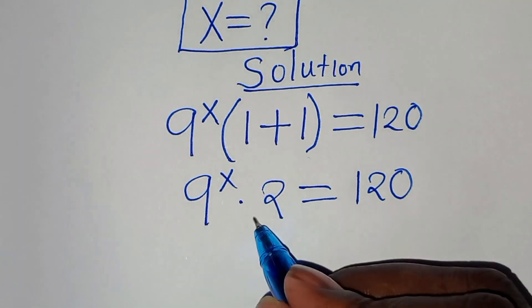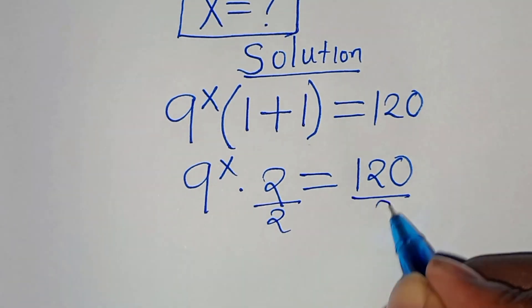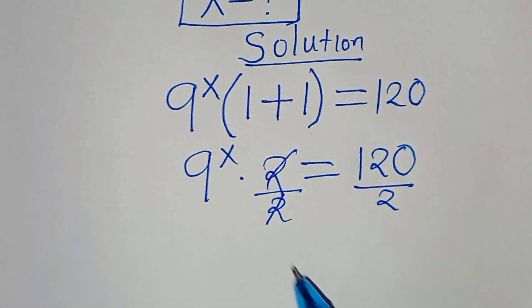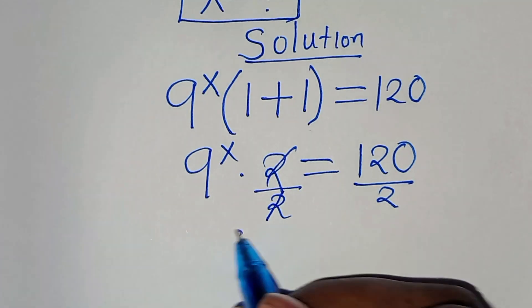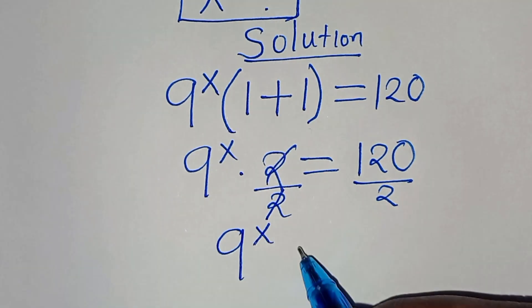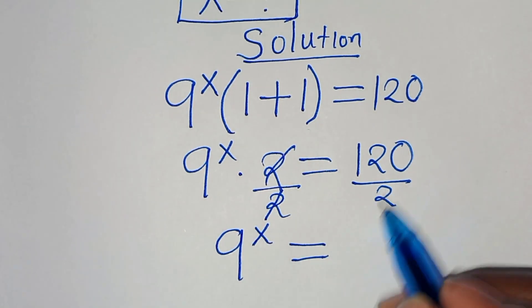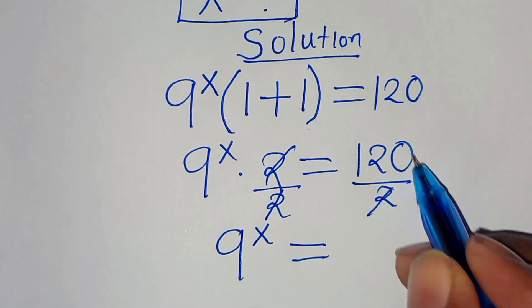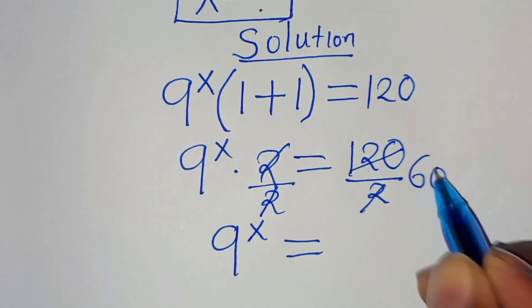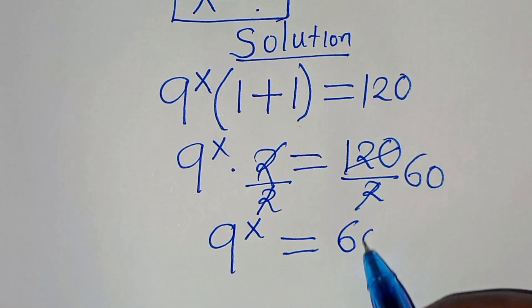So let's divide both sides by 2, so that now we have 9 to the power of x is equal to 120 divided by 2, and this is equal to 60.